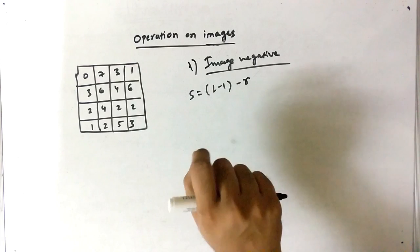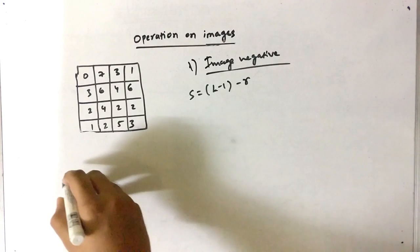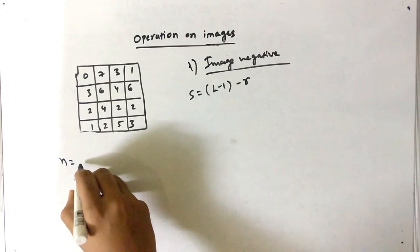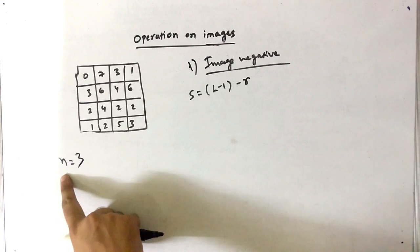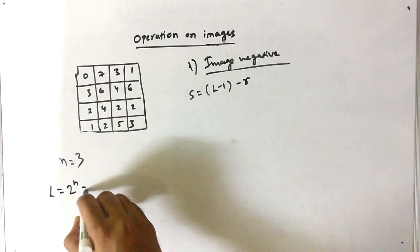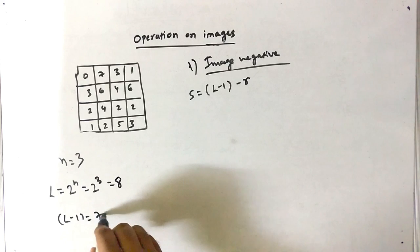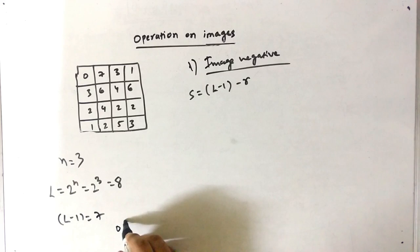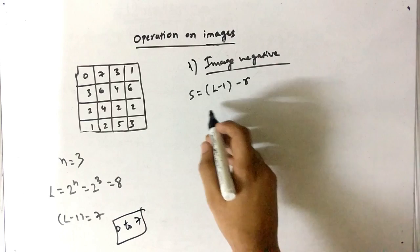L minus 1 requires understanding N. N means the number of bits per pixel, which here is 3. L is equal to 2 raised to N, which means 2 raised to 3, which equals 8. So L minus 1 is equal to 7, which is the maximum of the grayscale. The range of the grayscale is between 0 and 7.